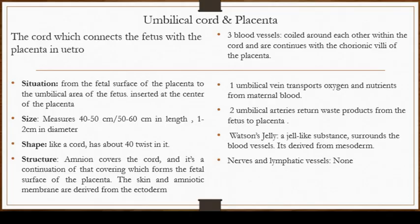The umbilical cord is the cord which connects the fetus with the placenta in utero. It is derived from the duct which forms between the amniotic sac and the yolk sac. Situation-wise, it extends from the fetal surface of the placenta to the umbilical area of the fetus, and it normally sits at the center of the placenta.